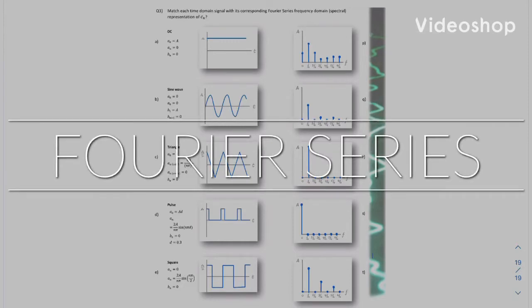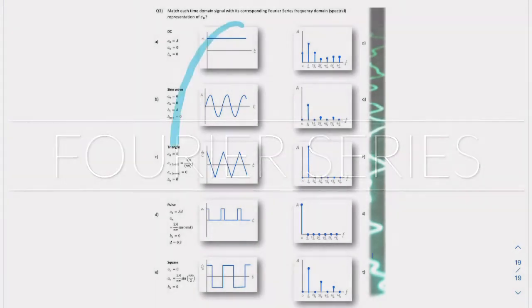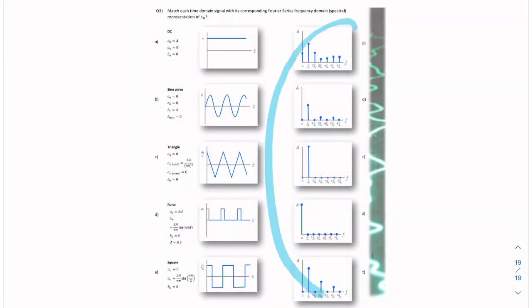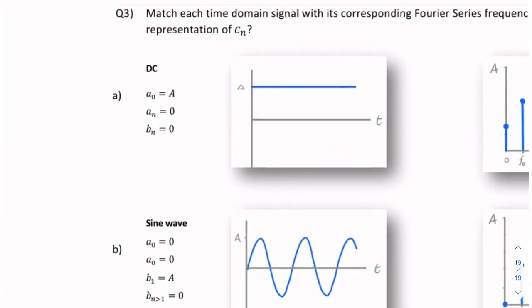In this question, we have a number of time domain signals and a number of spectra — frequency domain representations. The question is to match signals with their corresponding spectra. We're given a little bit of help: for each of our terms, we're given a description and the Fourier coefficients — the a0 (the DC term), the a_n's, and the b_n's.